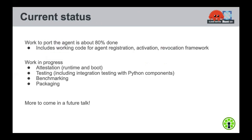The current status of the Rust port of Keylime is about 80% done. A lot of the functionality from the Python agent is already in place — the agent registration and activation steps are implemented, and we have the revocation framework in place for when a malicious script is executed on a node. We're still working on attestation for boot and runtime, and we'll need extensive testing before packaging. But we're getting there — it's been an exciting and rewarding project.